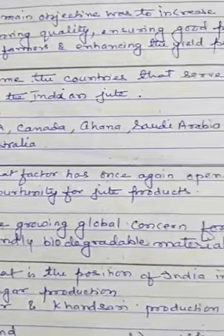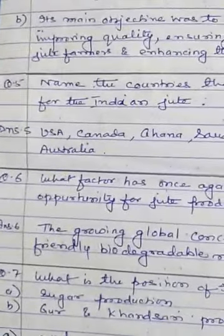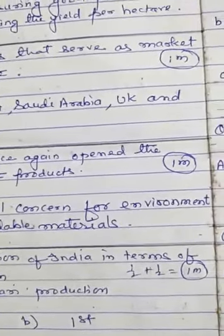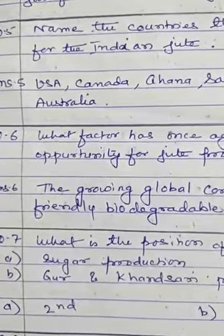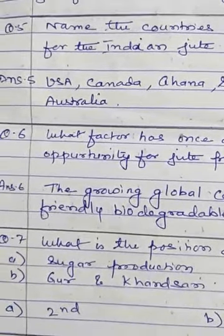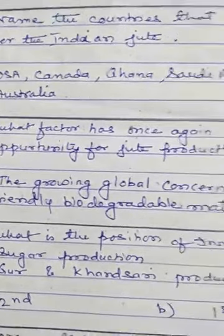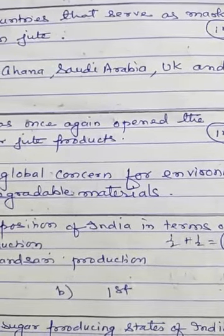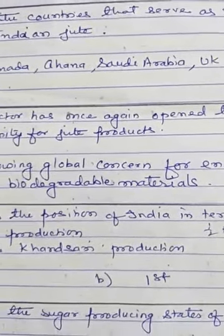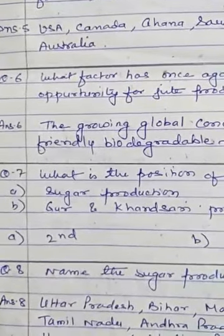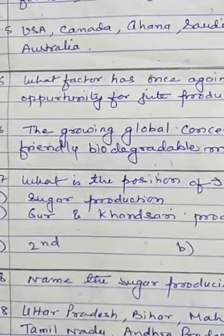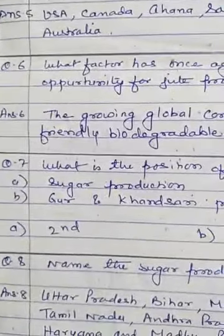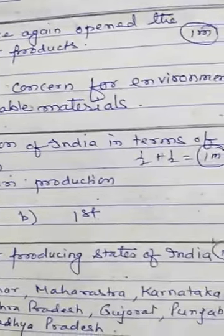What is the position of India in terms of sugar production and in terms of gur and khandsari production? In terms of sugar production, India is second in the world after Cuba. In terms of gur and khandsari production, India is the leading producer — first in the world.